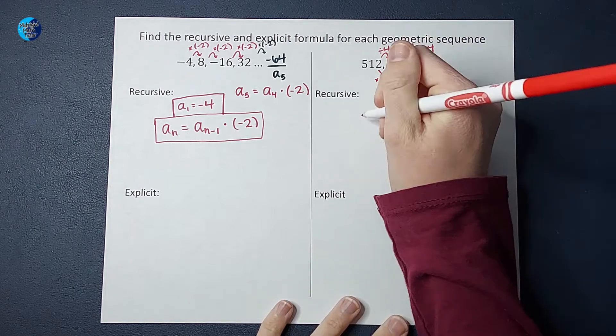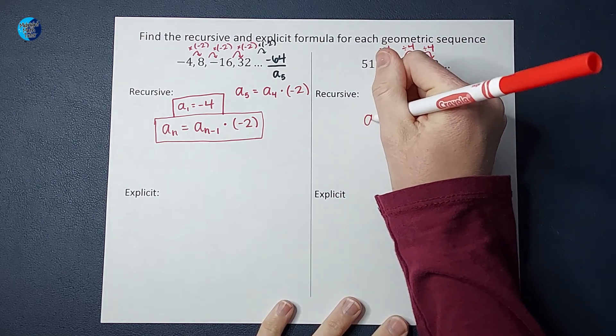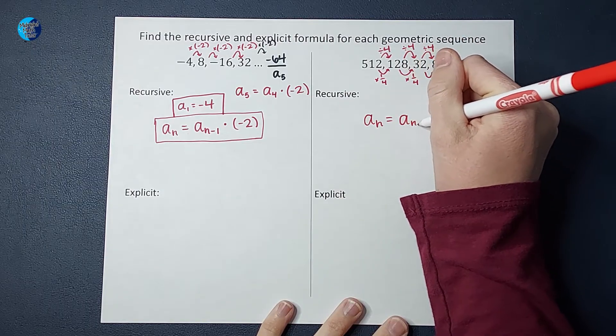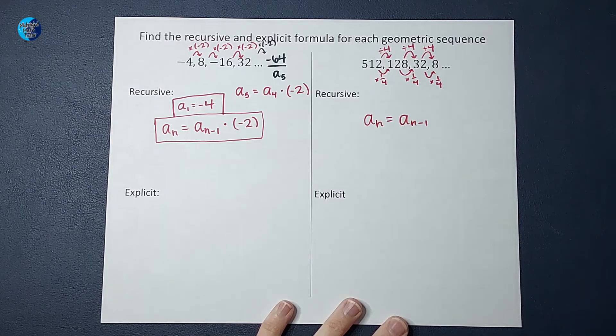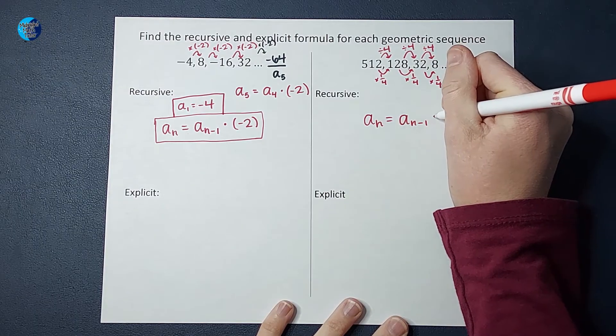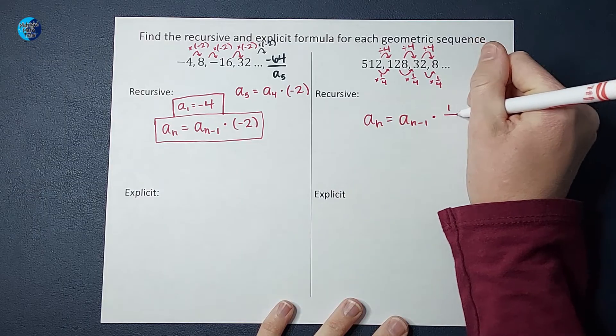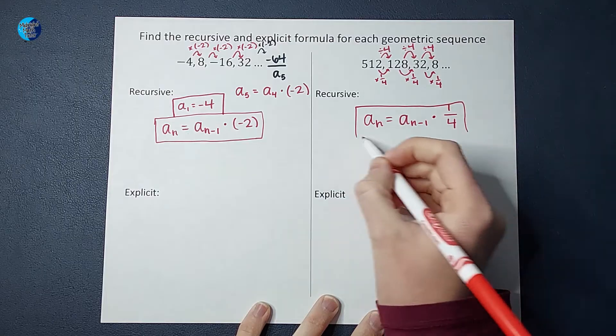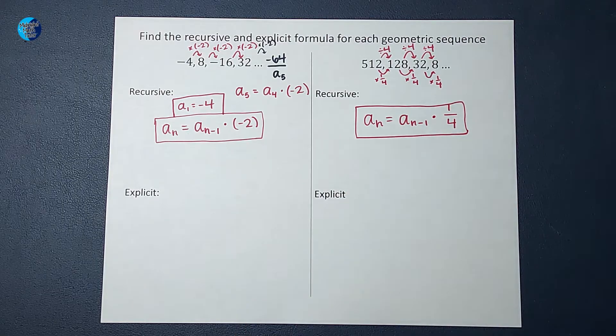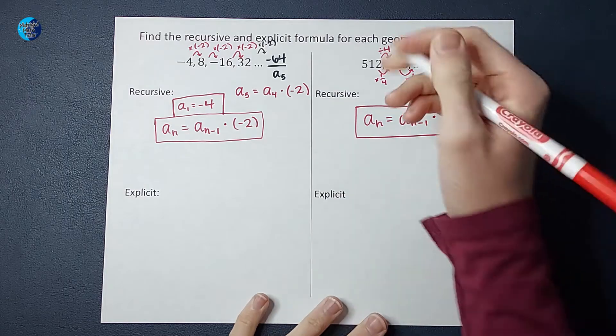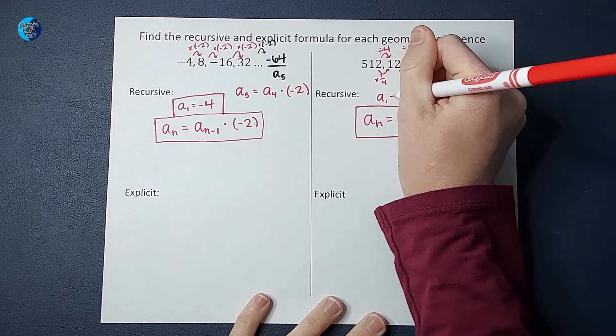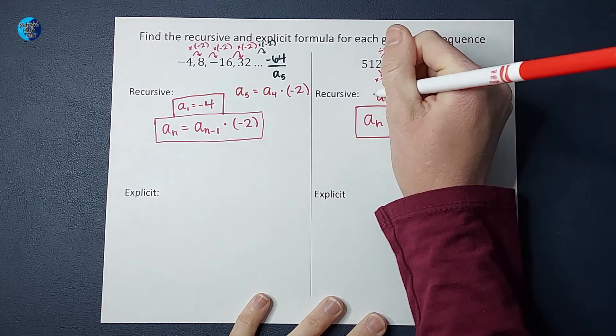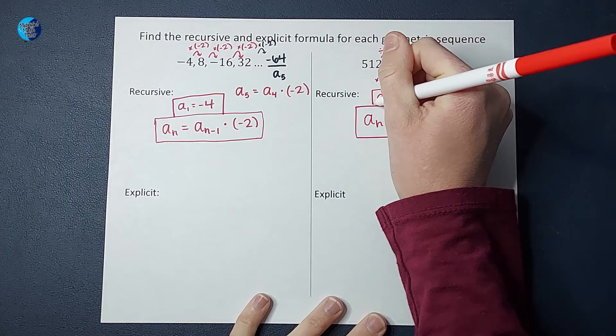If I were looking for the next term, I would take the one before and multiply by one-fourth. How do I write that in math language? I say whatever number you want to find, A sub N, take the one before it, A sub N minus one, and we multiply by one-fourth. For this to be helpful, we need to let people know what the first number is. A sub one is equal to 512.